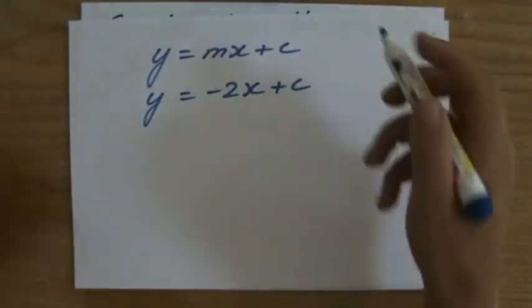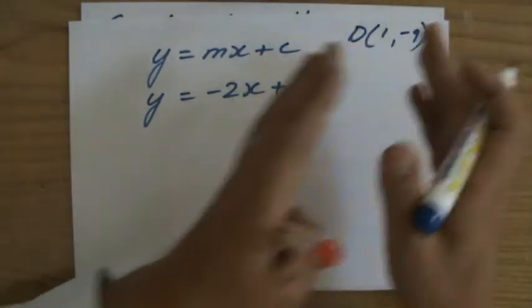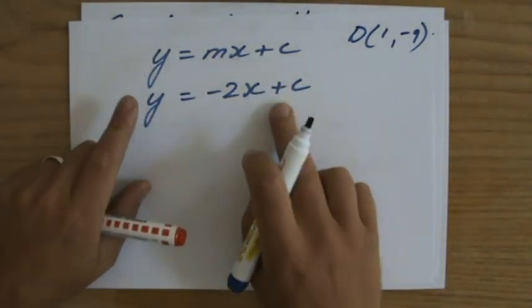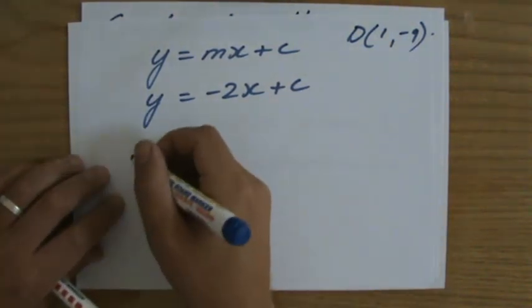Point D is right here, (1, -9). And I pick one of those coordinates and substitute it in my equation. I found the gradient first. Now, what is y? Y is -9.